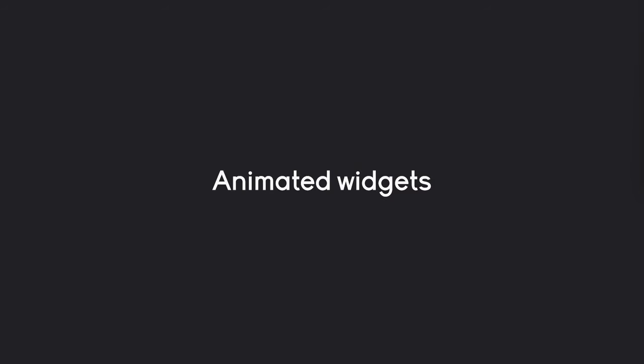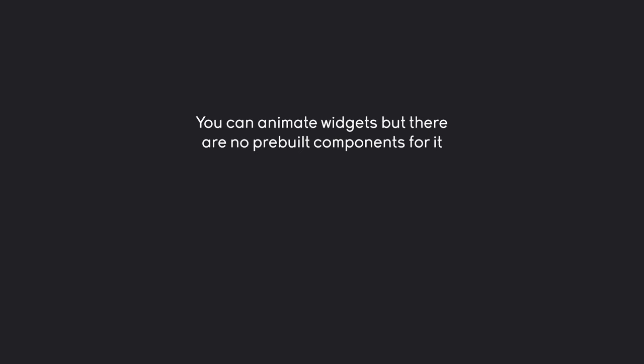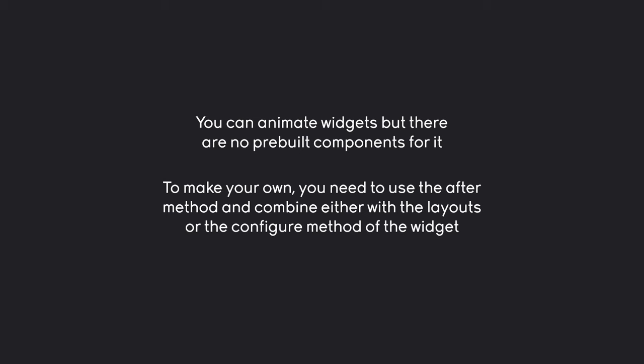Let's cover some theory first. In TKinter you can create animated widgets but you do not have pre-built components for it. As a consequence you have to make your own systems. For that you need two major concepts. The first one is the after method, which allows you to call a function after a certain amount of time. You combine this either with the layout methods or with configure, which can update the position, size, text, and color of any widget.